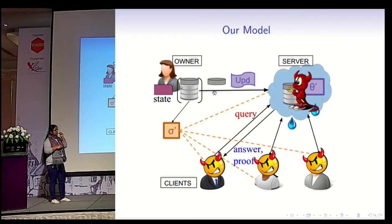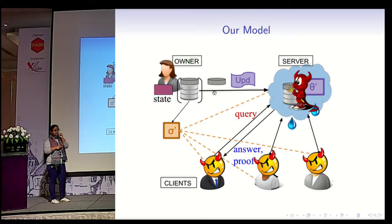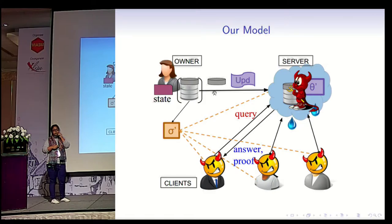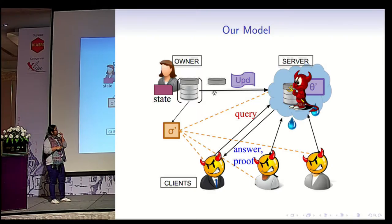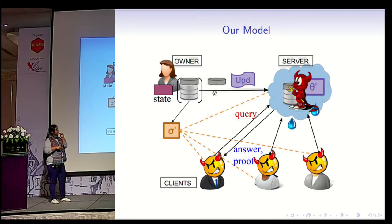The model we are considering is the same as this outsourced data structure model. Traditionally, only the server was considered to be adversarial, so answers were not trusted and a proof had to be returned with the answer. Additionally, we are also considering leakage from the proofs, meaning we treat the client as potentially adversarial and trying to learn more information than the answer itself. We want the proofs to be simulatable given only the answer and nothing else.